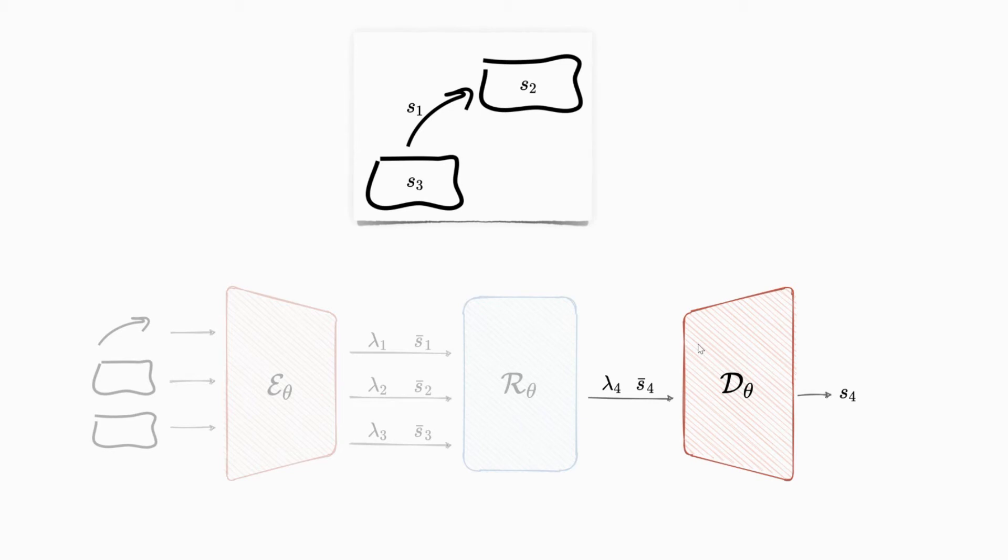The representations learned by the encoder must be informative for both the reconstruction of the strokes and the predictions of the future strokes. At inference time, our model is able to operate in the embedding space autoregressively, and hence the encoder is only required for the encoding of the user inputs.